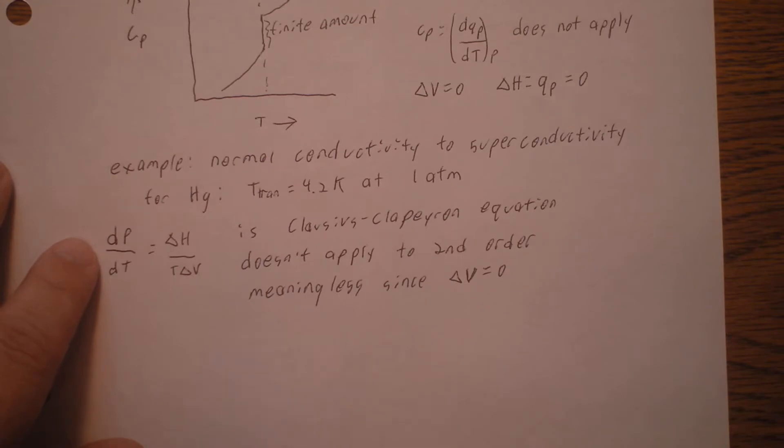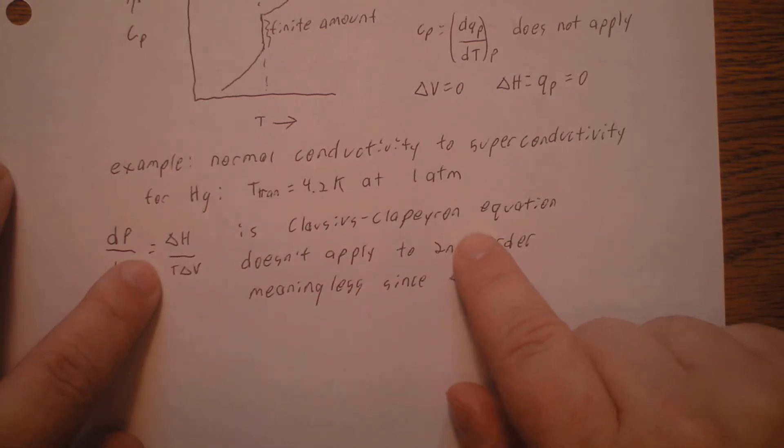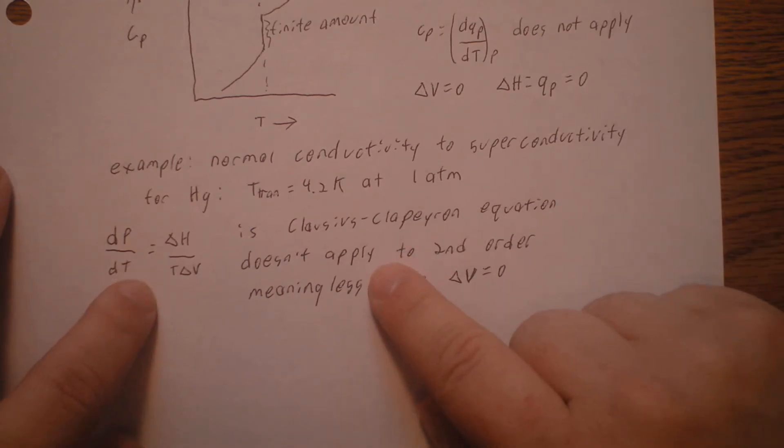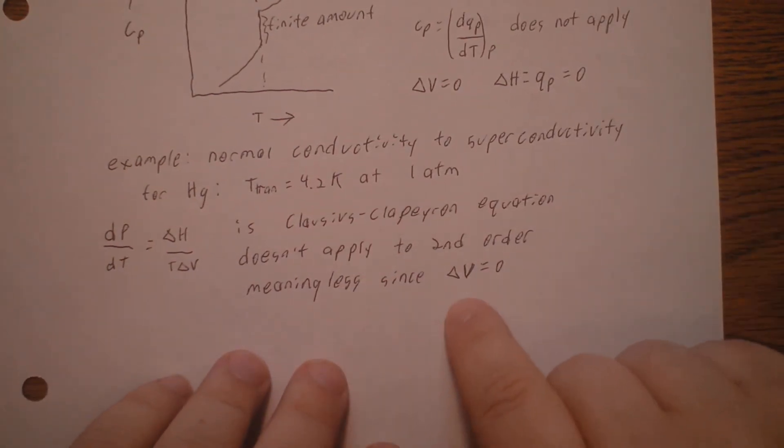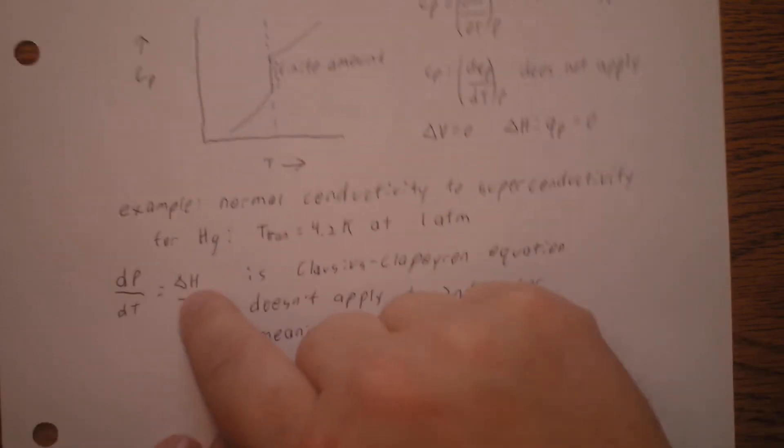The derivative of pressure with respect to temperature is going to be equal to the change in enthalpy divided by temperature times delta volume. This is the Clausius-Clapeyron equation. But the thing is, that doesn't apply, because with a second order transition, the change in volume is equal to zero. You'd be dividing by zero.